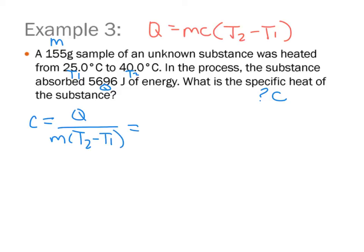So if I plug in my values, I have 5696 joules on top. I have my amount in grams and my temperature change, which is 40 degrees Celsius minus 25 degrees Celsius.